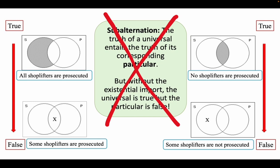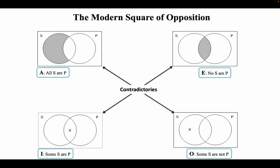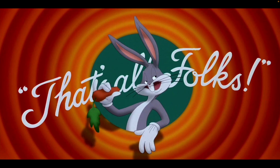Now, you might be sad to learn that the only law of opposition that remains untouched is contradiction. So A and O are still contradictories, and E and I are still contradictories — and that is it. You cannot make any other inferences according to the modern square of opposition. I hope this was clear and helpful. Thank you for listening; I'll see you in the next video.